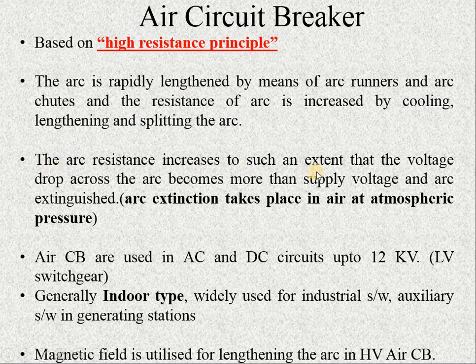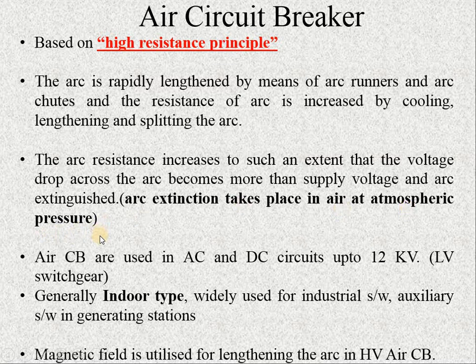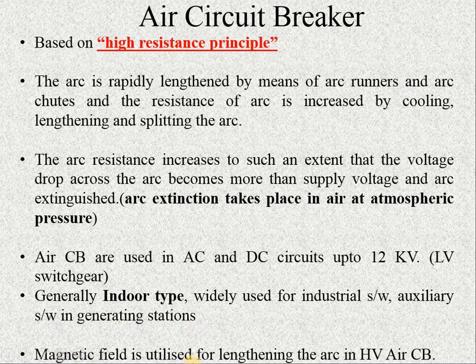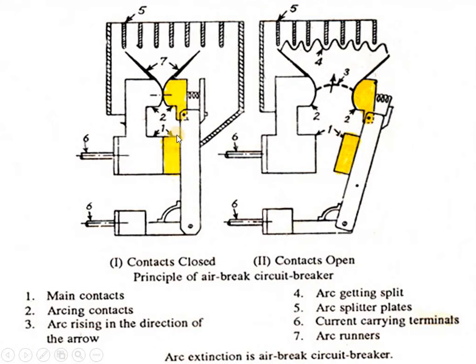The arc resistance increases to such an extent that the voltage drop across the arc becomes more than the supply voltage and the arc is extinguished. The arc extinction takes place in air at atmospheric pressure. Air circuit breakers are used in AC and DC circuits up to 12 kV, that is low voltage switchgear, and are generally indoor type widely used for industrial switchgear and auxiliary switchgear in generating stations. A magnetic field is utilized for lengthening the arc in high voltage air circuit breakers.